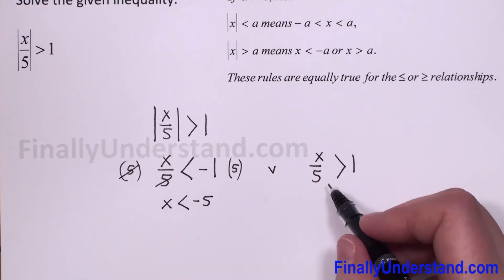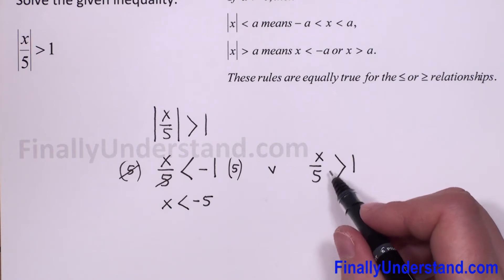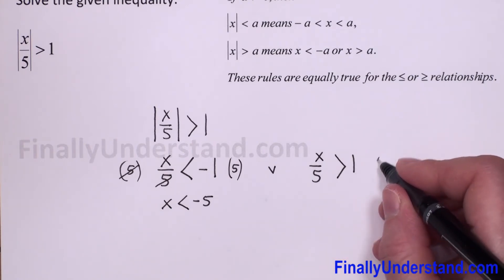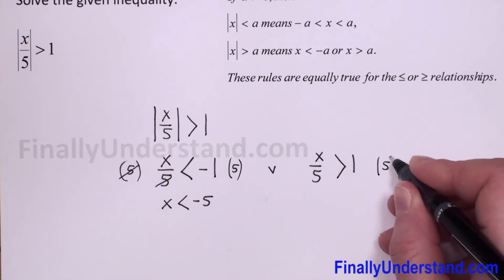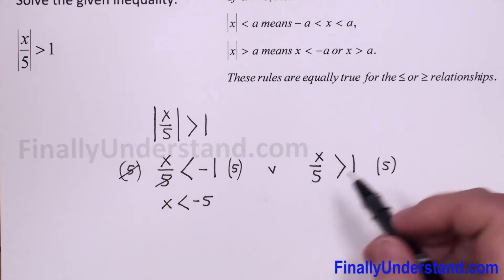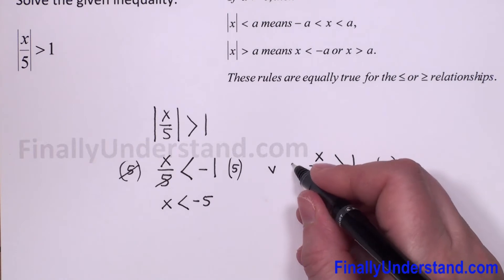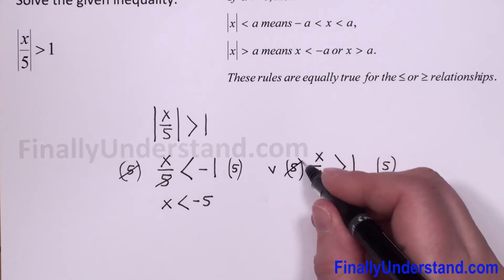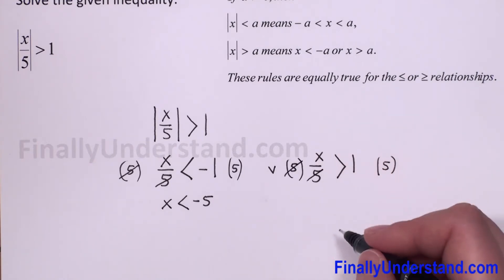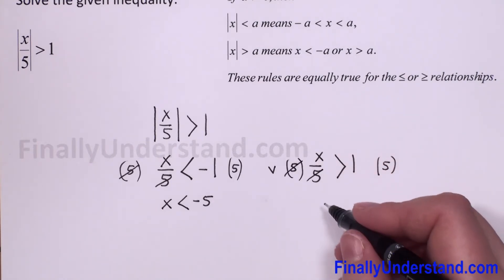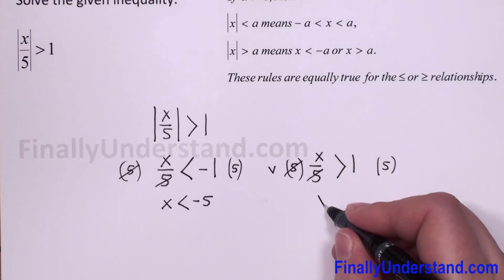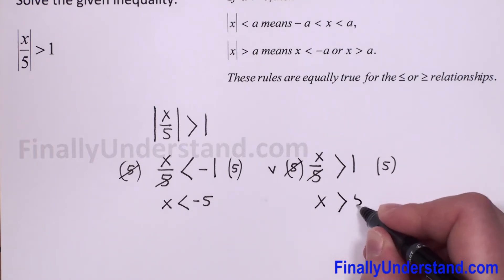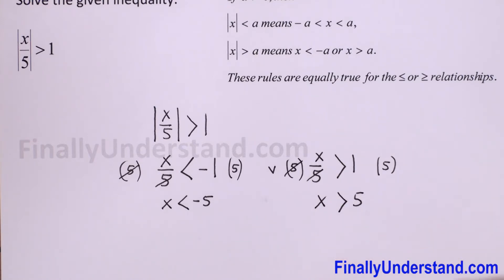Now we have to solve the second inequality. I will multiply by 5 to reduce this denominator. 5 and 5 will cancel and we have x is greater than 5.